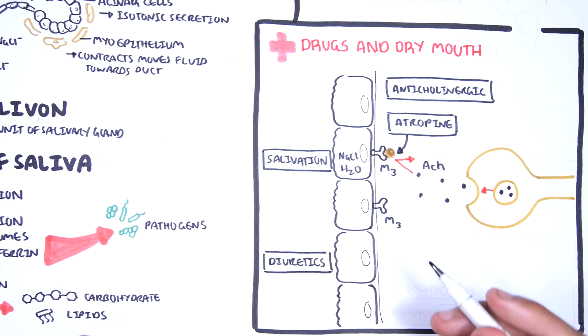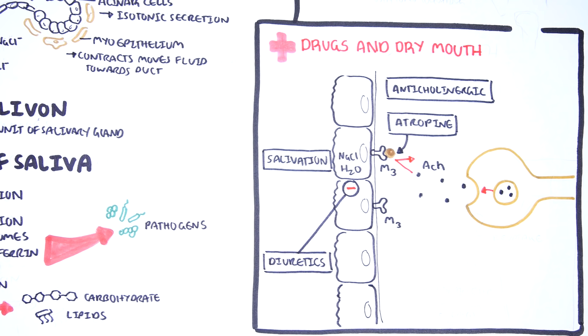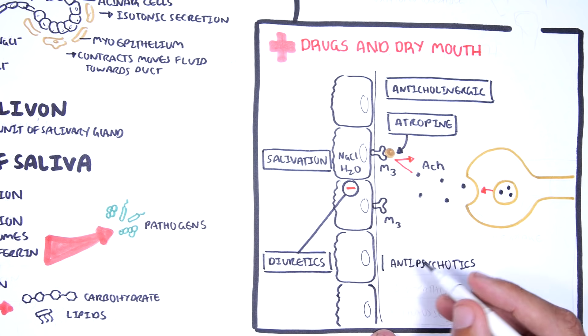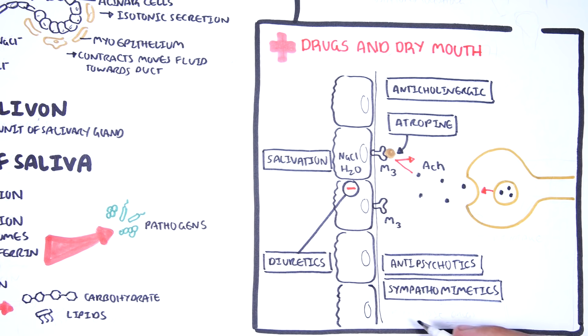Diuretics is another drug that works indirectly to cause a dry mouth by causing an increase in fluid excretion, thus reducing fluid volume which can lead to a dry mouth. Other medications that are important causes of dry mouth are antipsychotics, sympathomimetics, and cytotoxic drugs.